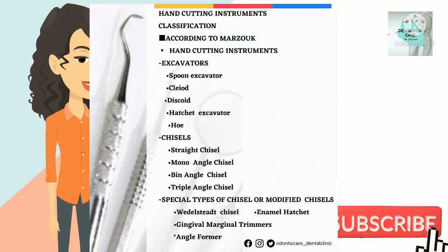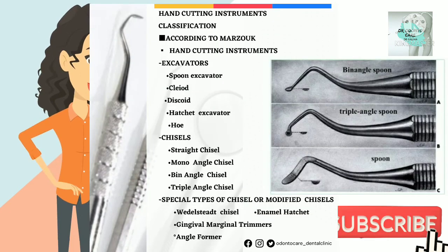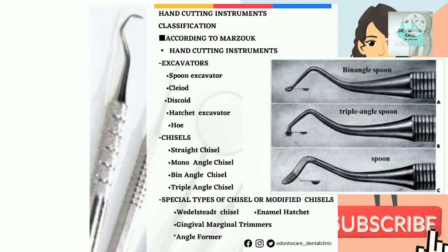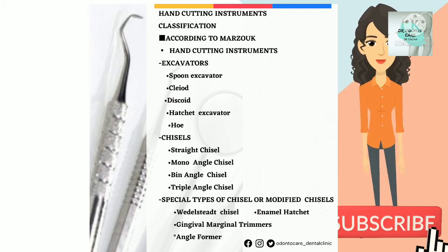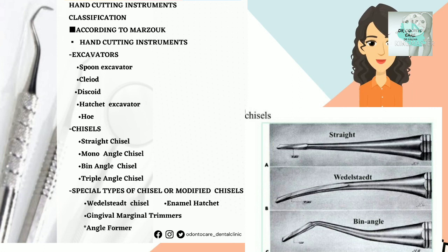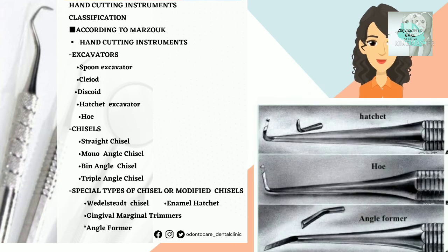Number 2: Isolating instruments — cotton roll holder, rubber dam, saliva ejector, and suction apparatus. Number 3: Hand cutting instruments — excavators including spoon excavator, cleoid, discoid, and hatchet excavator; and hoe. Chisels include straight chisel, mono-angle chisel, bin-angle chisel, and triple-angle chisel.